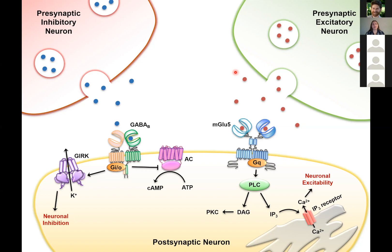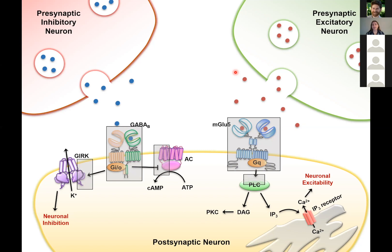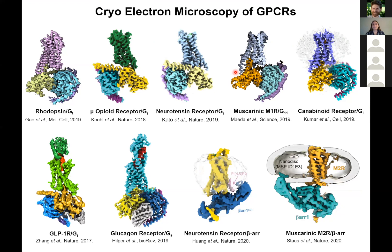The pathways that these receptors go through is relatively well known, but what's less known is the actual precise mechanistic details at a molecular level of how ligand binding to a receptor causes the receptor to become activated, and how that changes protein-protein interactions between the receptor and the G-protein and G-protein effector enzymes. In the Skiniotis lab, we use our favorite technique, cryo-electron microscopy.